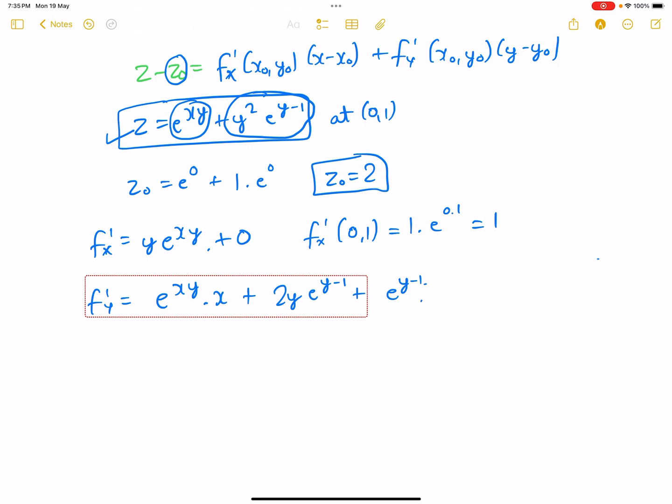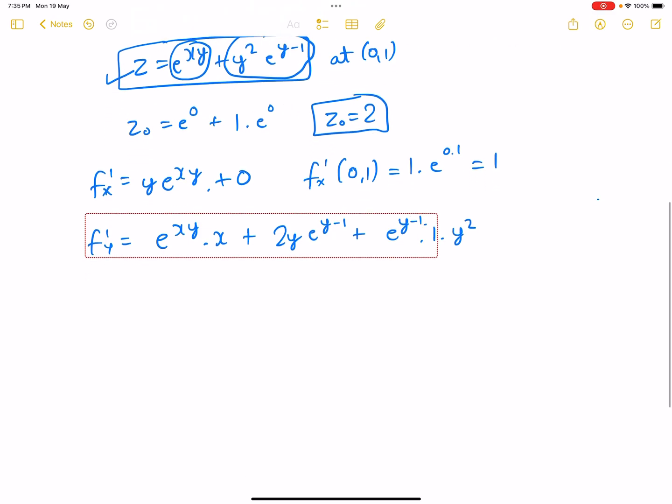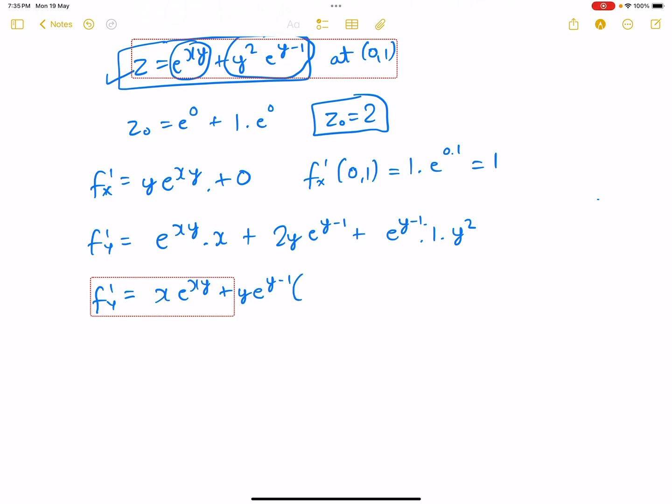So this is the final derivative. This can be further simplified as e to the power xy plus e to the power y minus 1 times y times (2 plus y).